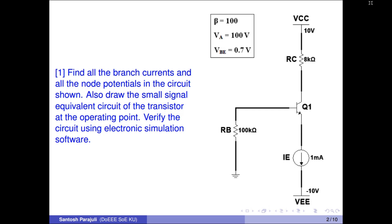The circuit has one NPN type bipolar transistor, a collector resistor, a base resistor, a current source, and two batteries. Transistor DC beta is specified as 100 and early voltage as 100 volts. For a forward biased emitter diode, the base-emitter potential difference is given as 0.7 volts.